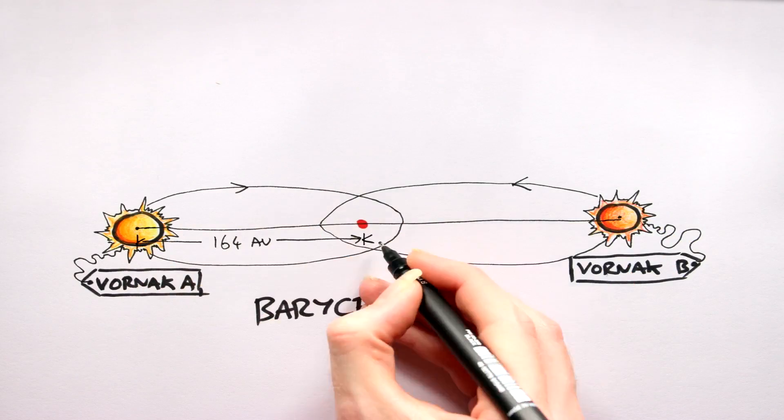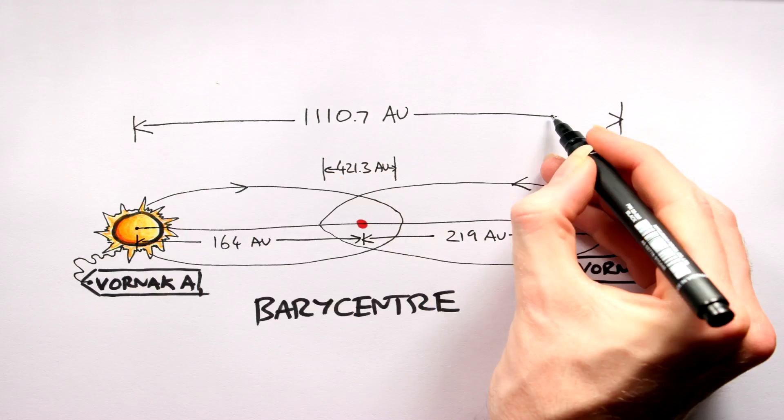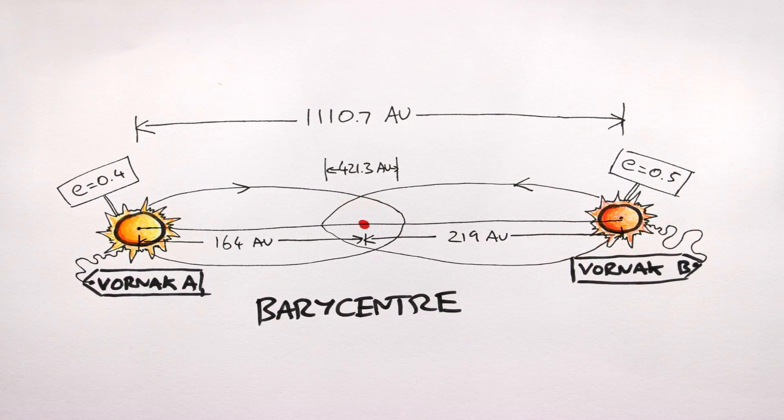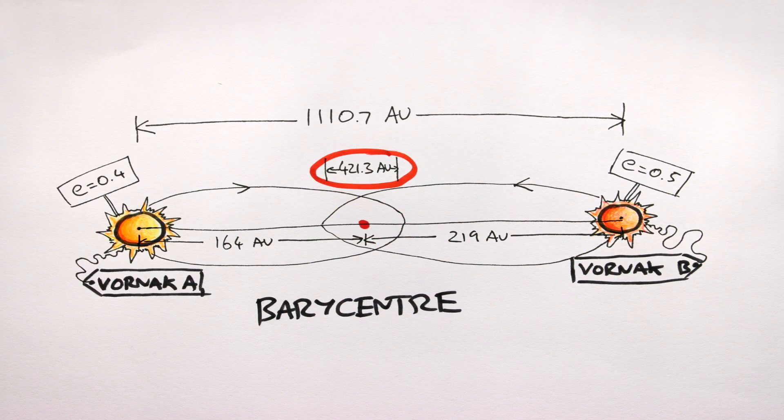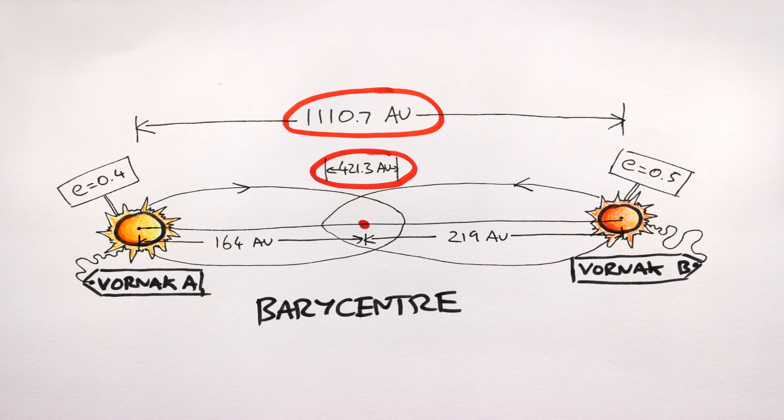The cool thing to note here is that even though I selected relatively low eccentricities, the distances between Vornak A and B vary hugely from 421.3 AU all the way up to 1110.7 AU.